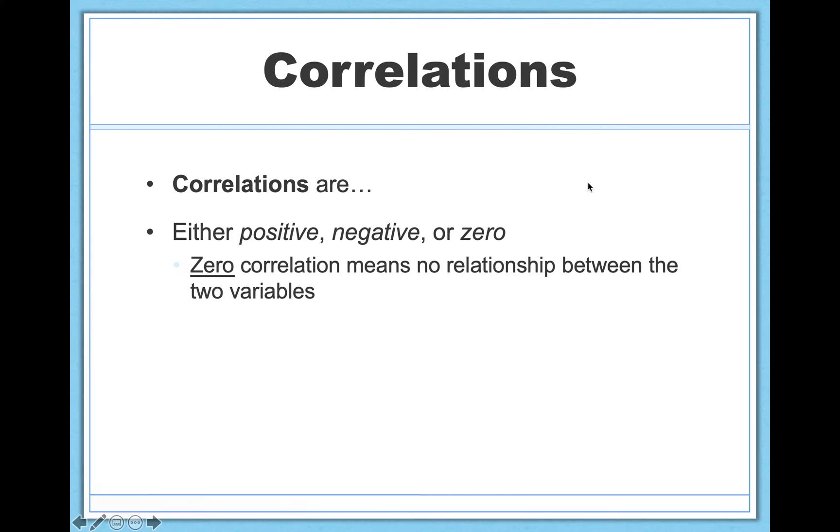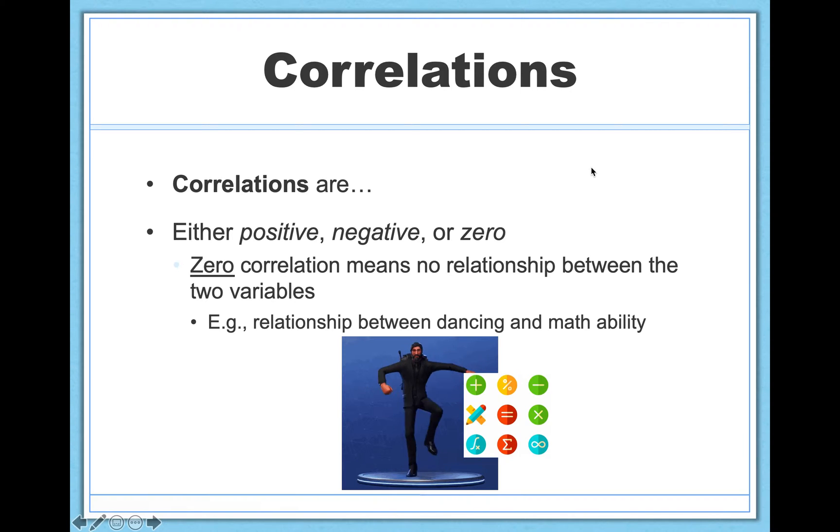So next we have our zero correlation. These are pretty easy to understand. It basically just means that there's no correlation, no relationship between the variables. For example, the relationship between dancing ability and math ability. I have no reason to believe that there's a relationship here. And if you told me you were a great dancer, I would have no guesses or assumptions about how good you are at math.